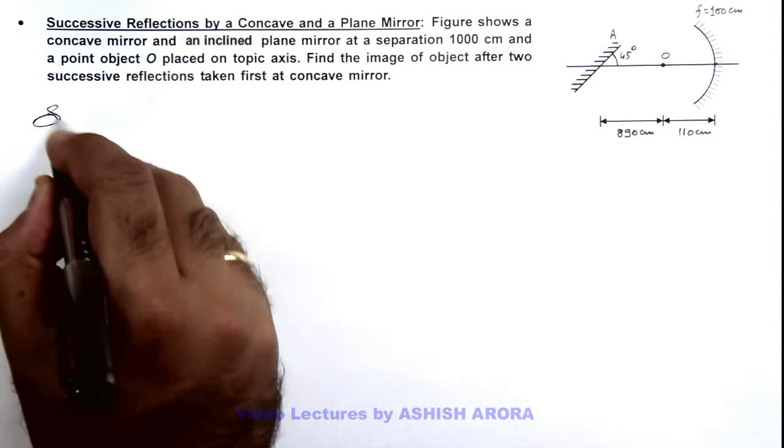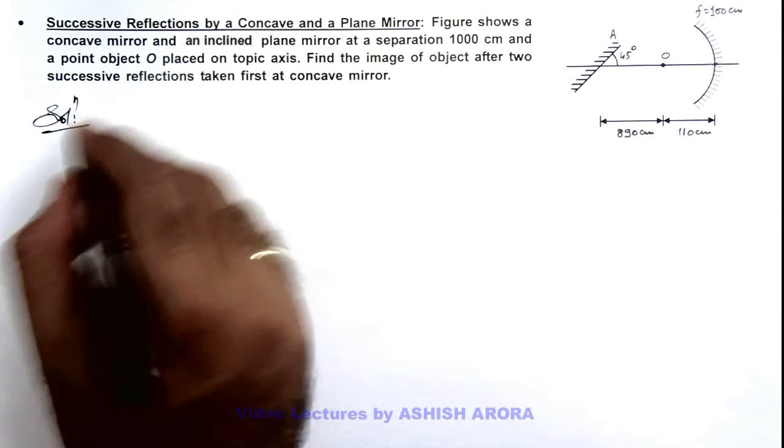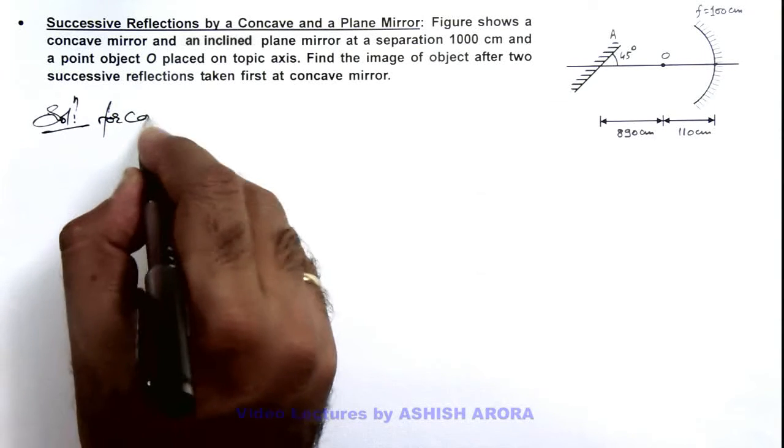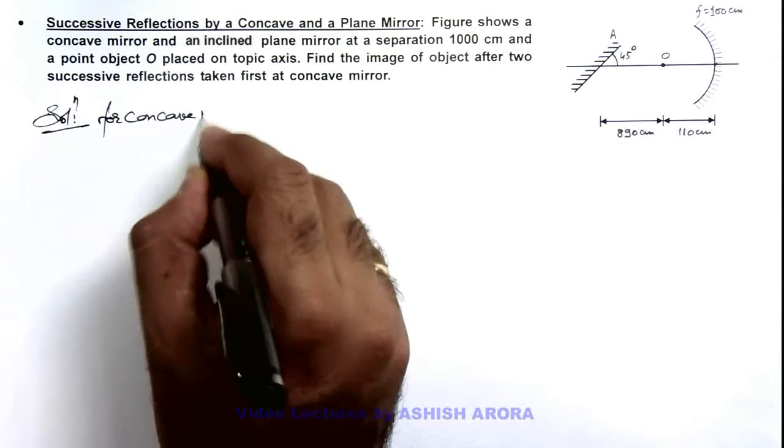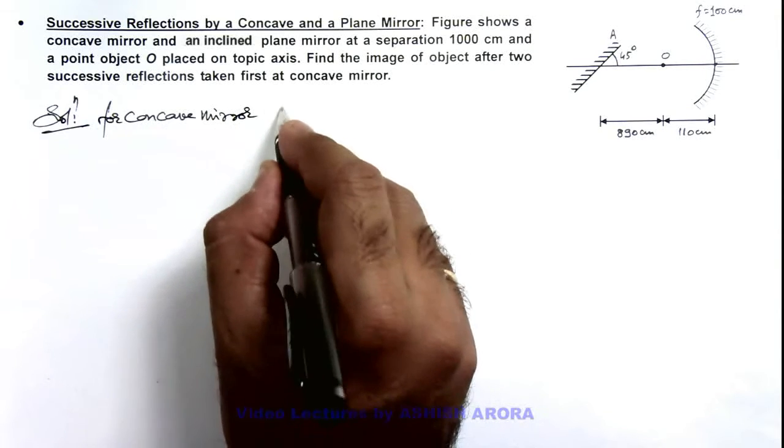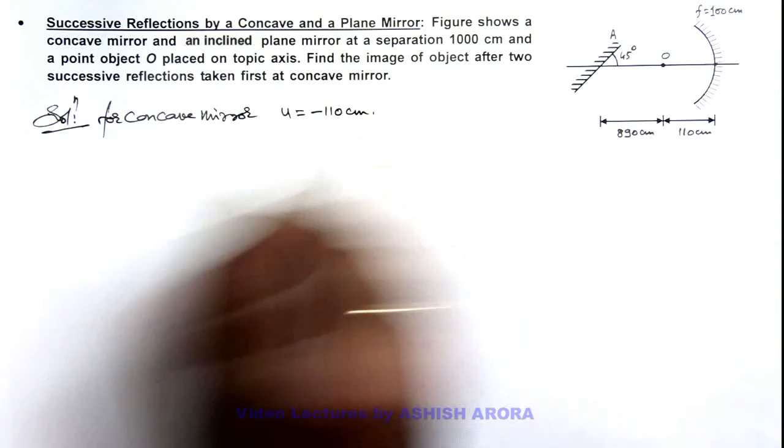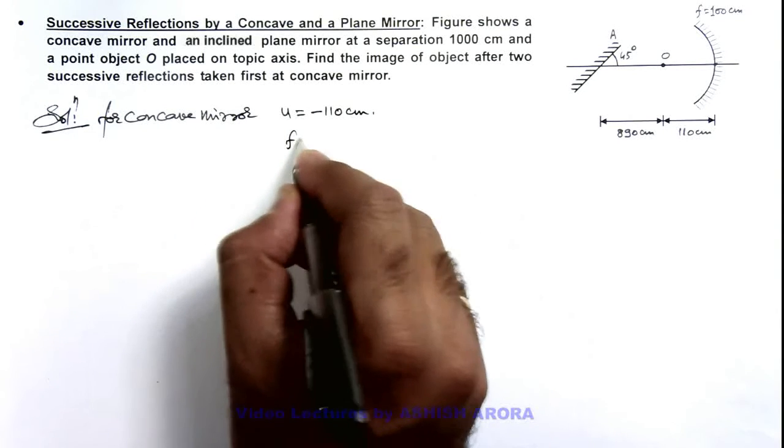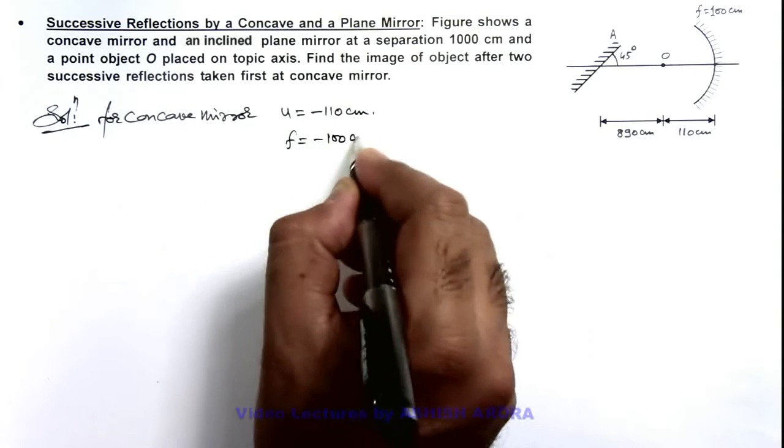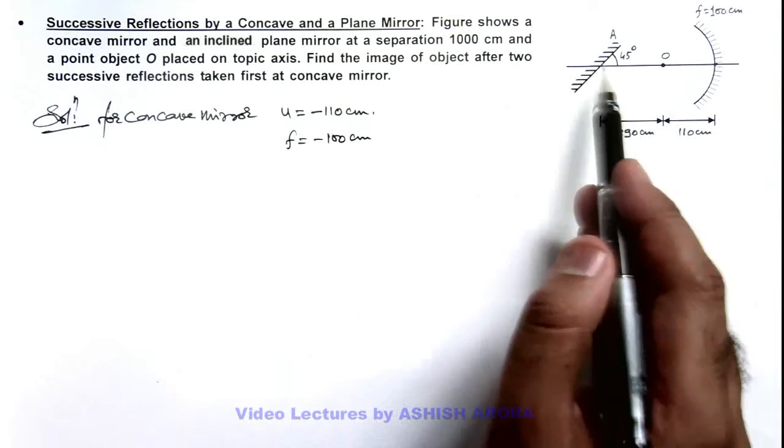Here in this situation we can consider for concave mirror, if we use mirror formula the value of u we can take as minus hundred and ten centimeter, and its focal length we take as minus hundred centimeter, as both its center and object are on the left side.